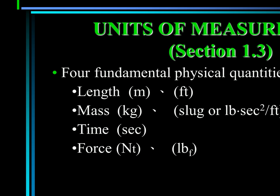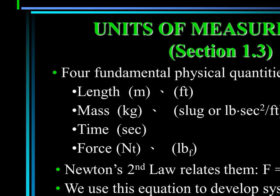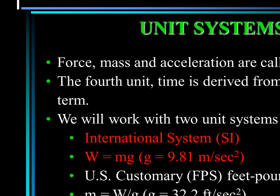Using Newton's second law F equals M times A, we develop a system of units. Units are arbitrary names we give to physical quantities. Force, mass, and acceleration are the basic units. The force unit is derived from the acceleration term. We work with two unit systems: the International System, called the SI system, where W equals Mg and G equals 9.81; and US Customary, which means FPS (feet, pounds, seconds), where M equals W over G and G equals 32.2 feet per second squared.